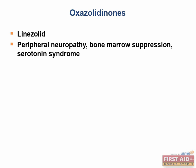Linezolid is associated with peripheral neuropathy, bone marrow suppression, and serotonin syndrome. Serotonin syndrome is a life-threatening situation involving an increase in serotonin, presenting with a cluster of findings including autonomic, somatic, and cognitive effects — such as headache, agitation, hallucinations, sweating, muscle twitching, and clonus. If noticed, the most important response is to stop the medication.